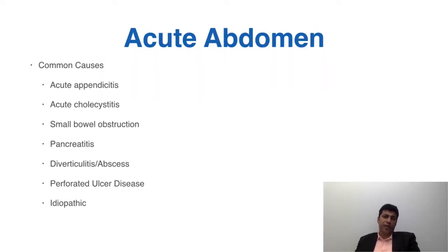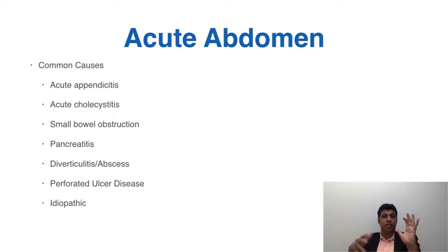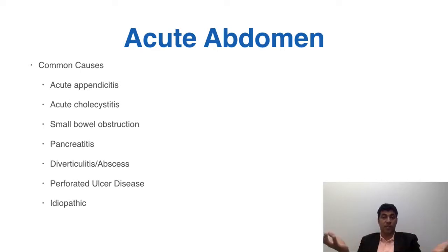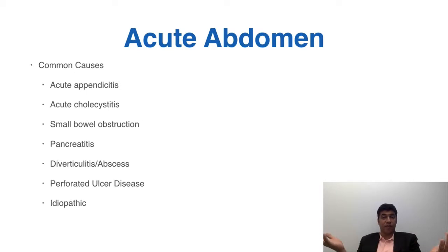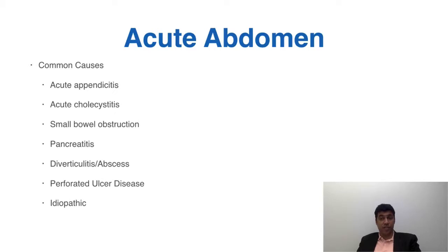Acute appendicitis is a classic teaching case with pain presenting in a fairly specific historical pattern — patients giving a history of pain evolving in a certain way, at a certain location, with certain associated symptoms and physical examination signs. Other common causes include acute cholecystitis or inflammation and infection of the gallbladder, small bowel obstruction, pancreatitis and other pancreatic conditions, diverticular disease — typically acute diverticulitis, often perforated with an abscess or phlegmon — perforated peptic ulcer disease, gastritis, and other upper gastrointestinal conditions.